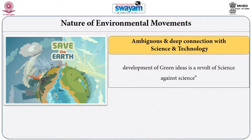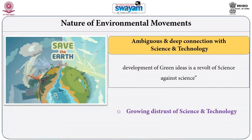On the one hand, there is a growing distrust against science and technology, because it has been realized that most environmental problems are because of scientific and technological advancement. Because of industrialization, we see these environmental movements. Science and technology, or growing industrial technology, becomes the common adversary of almost all categories of environmental movements.